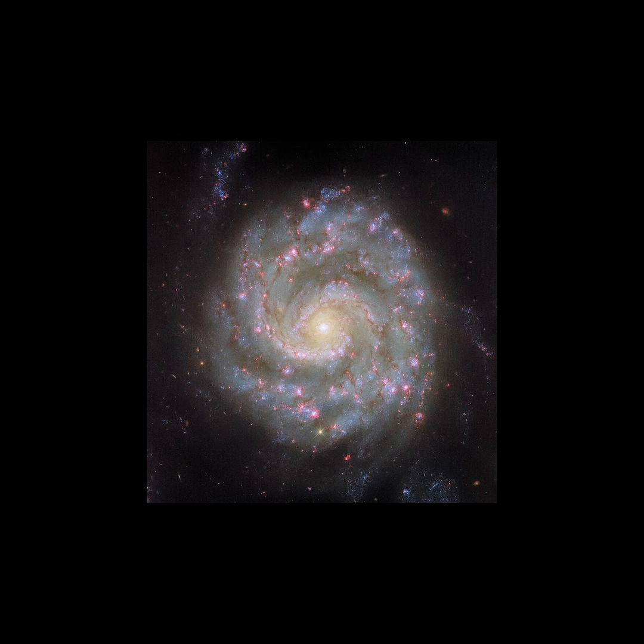If the stars move too quickly in this outer region, gravity wouldn't be strong enough to hold onto them, and they would be ejected from the galaxy.